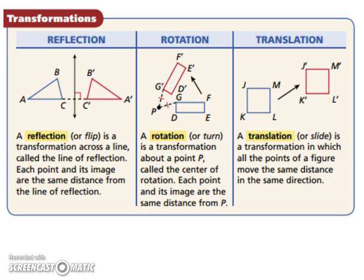Let's look at some specific transformations. A reflection, you can think of it as a flip, is a transformation that's across a line. This line is often called the line of reflection. Each point and its image are the same distance from the line of reflection.